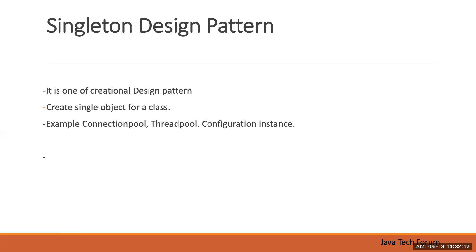One more use case is a configuration instance. In Spring Boot or a Spring application, there is only one configuration file which handles all security-related things. In those kinds of situations we have to use the Singleton Design Pattern to create an instance of those objects. Singleton basically restricts object creation to one — that is what singleton means.